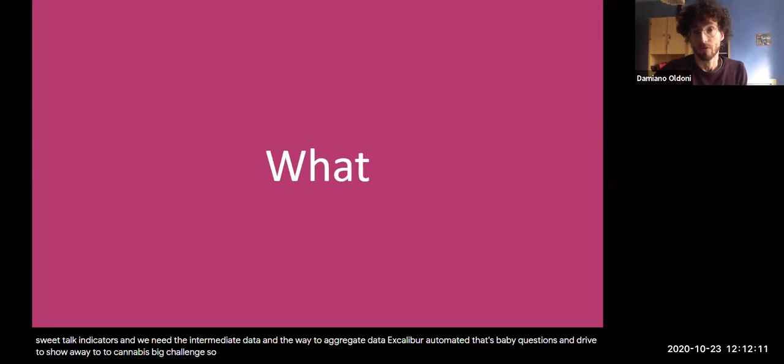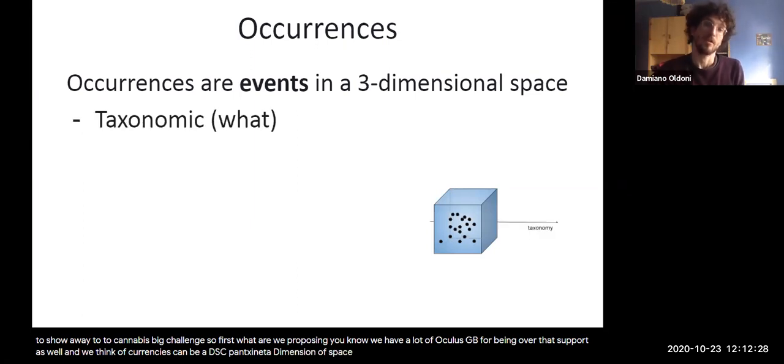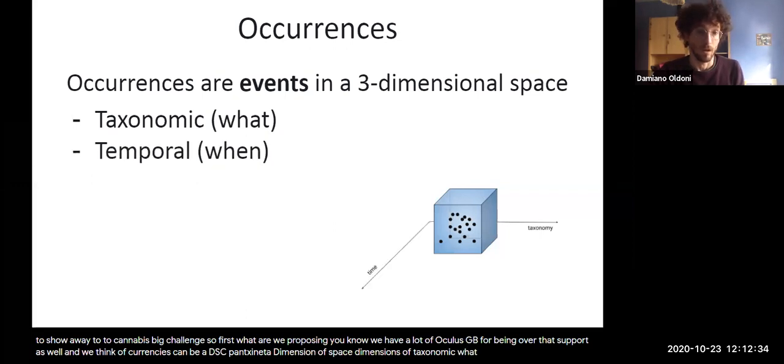So first, what are we proposing? We know we have a lot of occurrences in GBIF and other data portals as well, and we think occurrences can be ideally thought as events in a three-dimensional space, where these three dimensions are taxonomic taxonomy, so what, temporal dimension so when, and spatial dimension where.